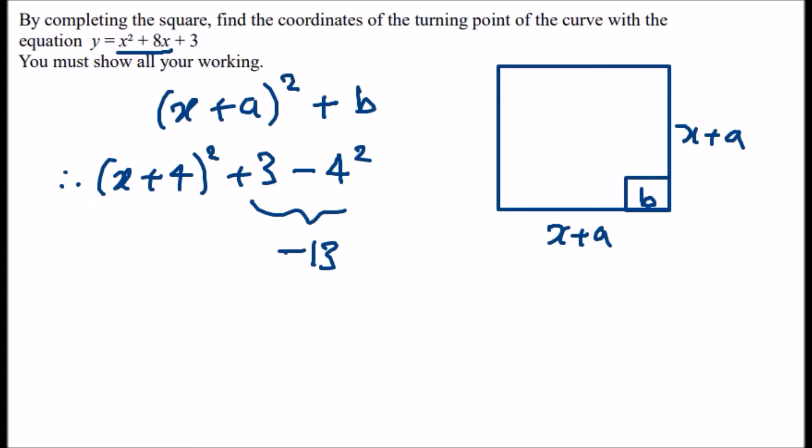And this, my friends, will give us a turning point of exactly – you look at the x value, so instead of x plus, it will be negative 4. And because the y is minus 13, it will be minus 13. So the turning point is (-4, -13).